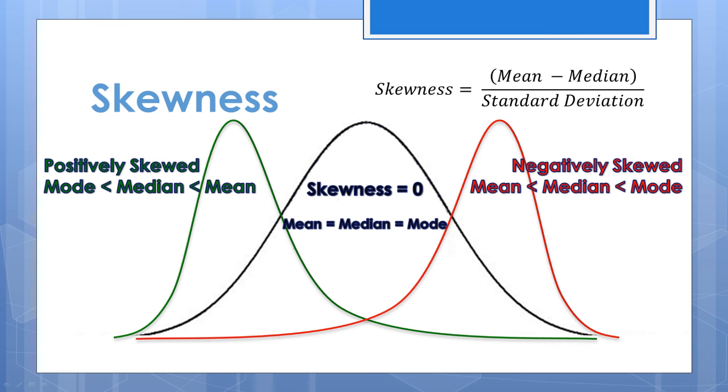Negative skewness means that there is a pileup of data to the right, with the long tail on the left side. The tail has been pulled in the negative direction. In this case, the mean is to the left of the median.